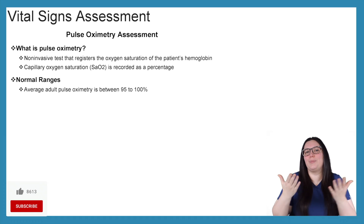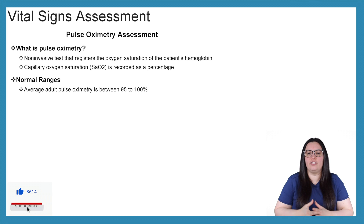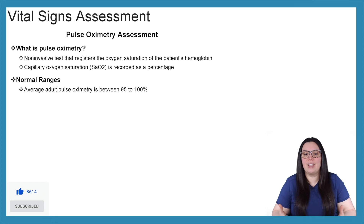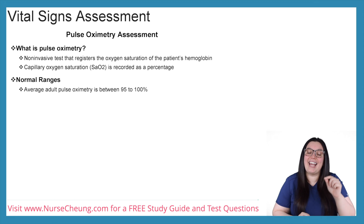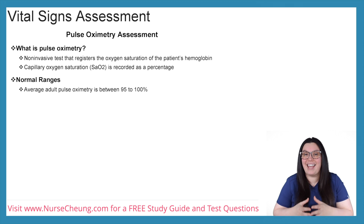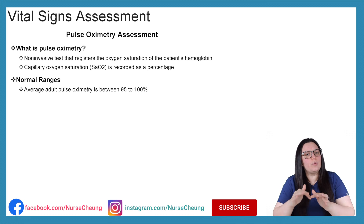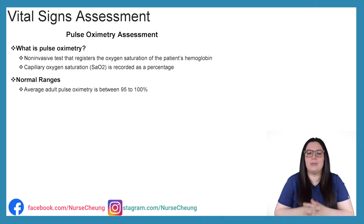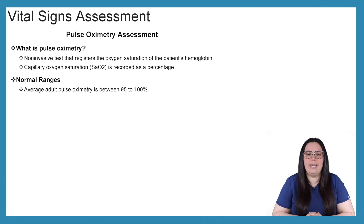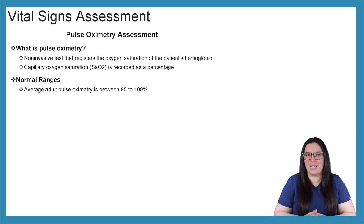So what is pulse oximetry? Well, it's a non-invasive test that registers the oxygen saturation of the patient's hemoglobin. That's the capillary oxygen saturation — our SaO2 — recorded as a percentage. Our normal ranges for SaO2 or SpO2 are going to be between 90 to 100 percent with our adult patients.